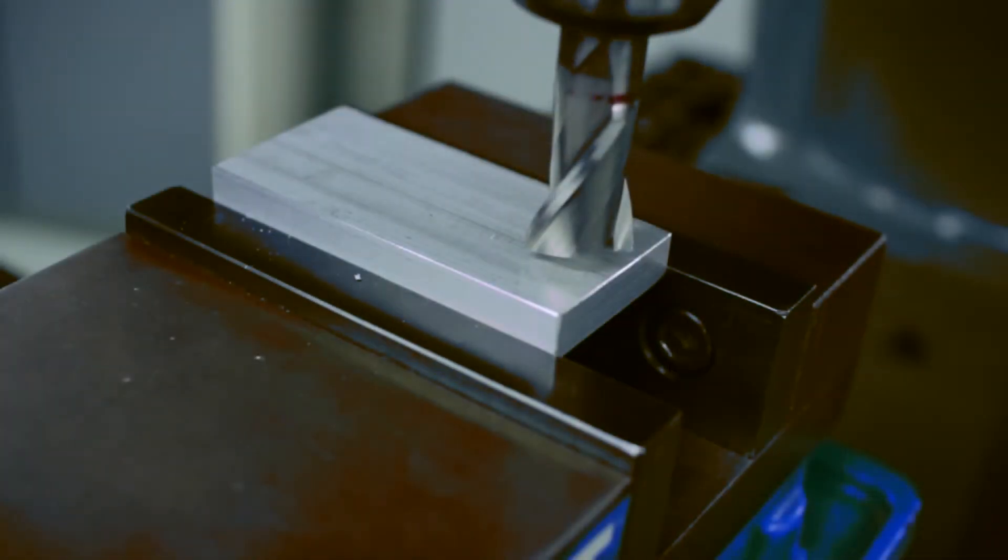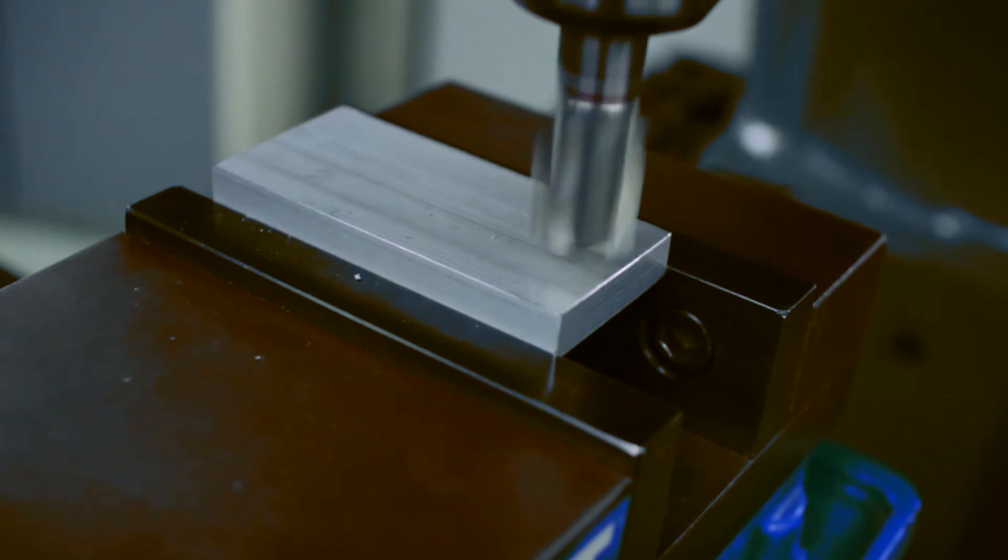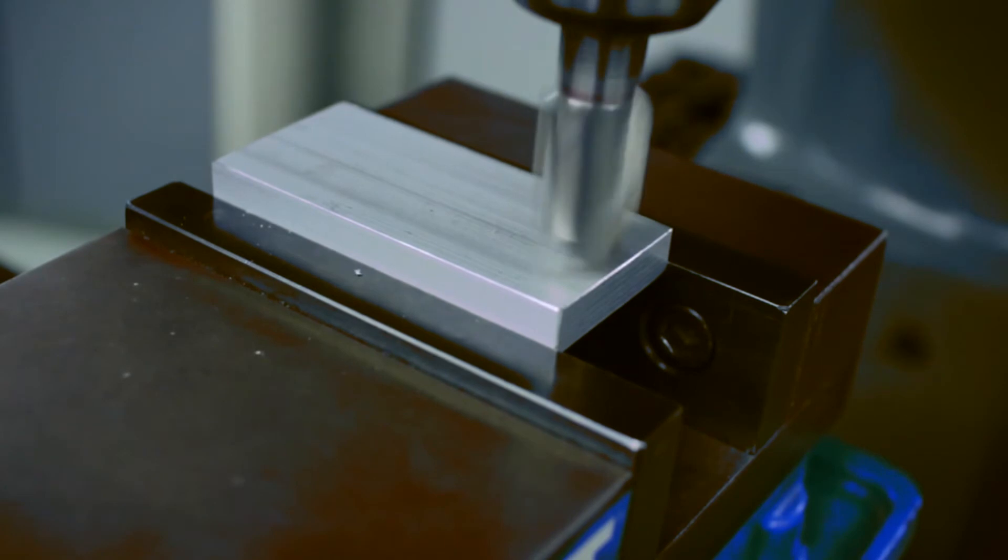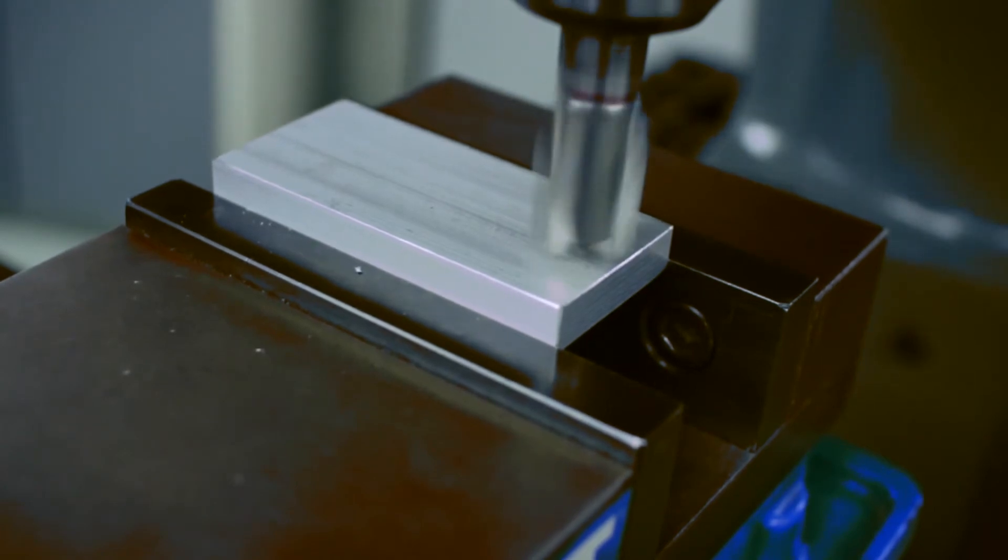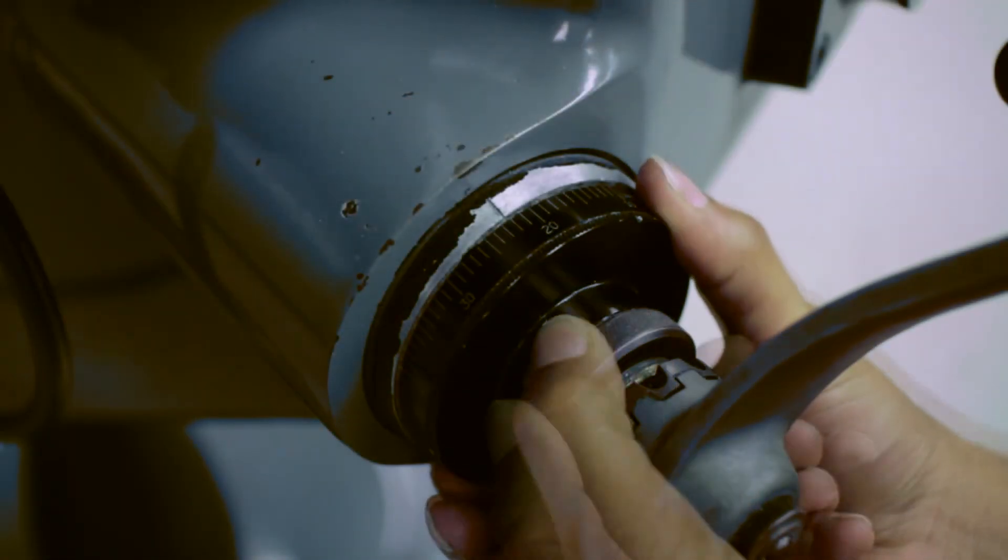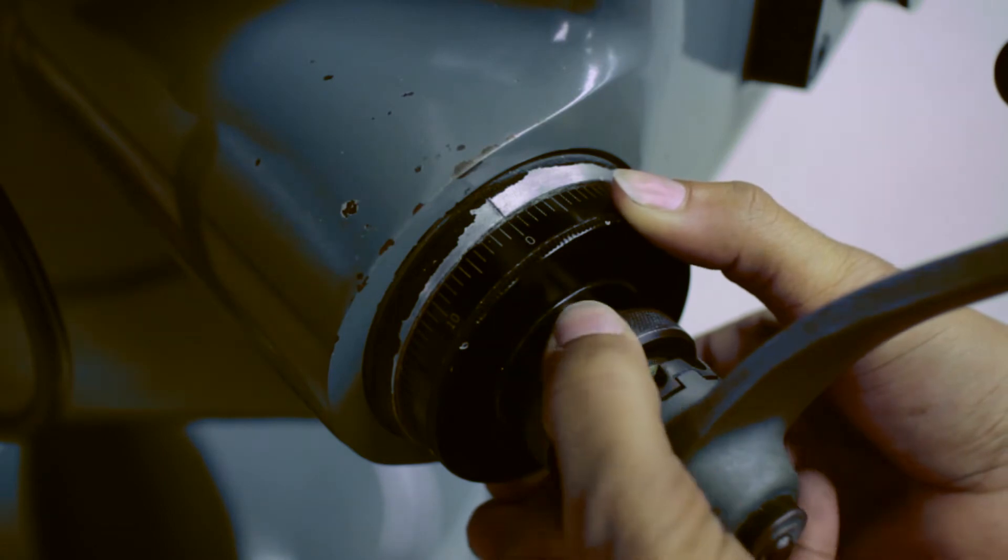To find your Z-Zero, turn on the machine and slowly bring the tool to the part. The first chip you see indicates a zero. Once you have touched off the part, loosen the lock nut, rotate the dial to zero, and tighten the lock nut.